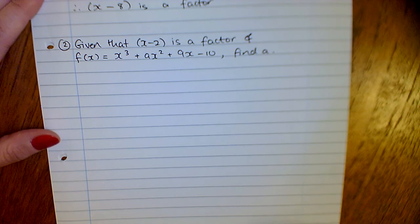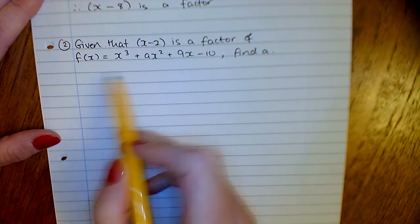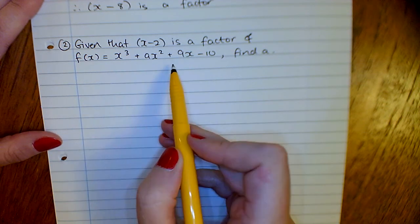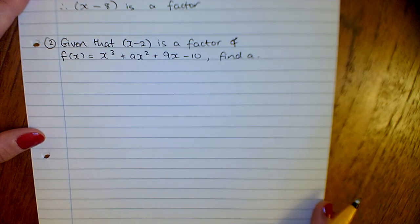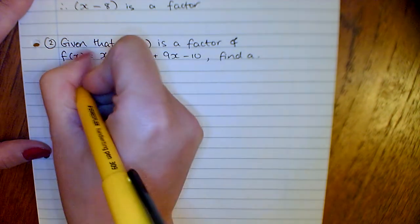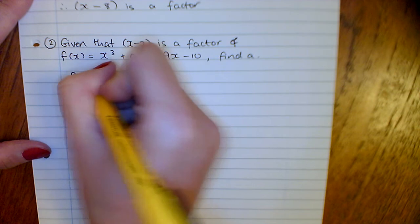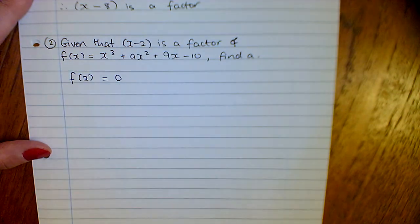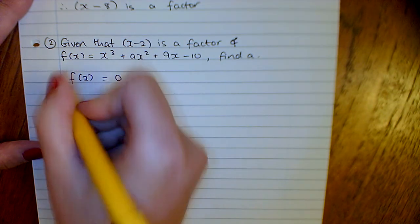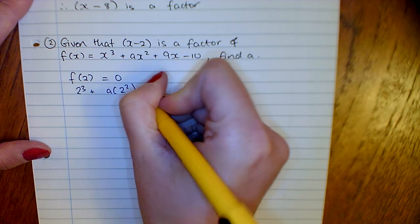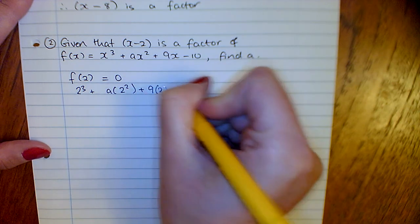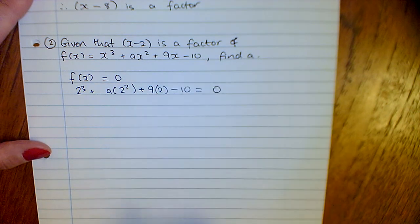Okay, our second one. Given that x minus 2 is a factor of this function x cubed plus ax squared plus 9x minus 10, find a. So that means we know that f of 2 has to be 0.